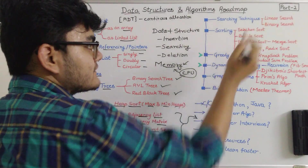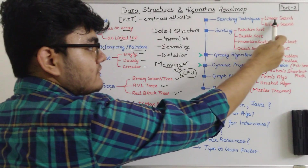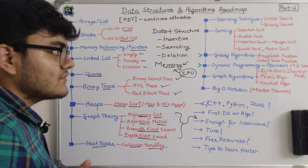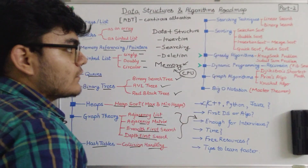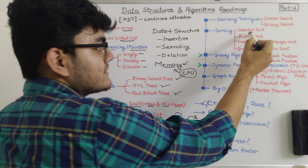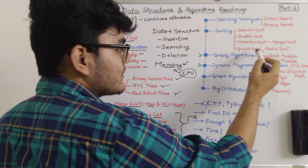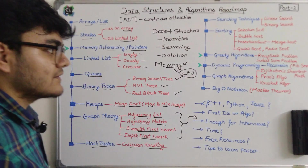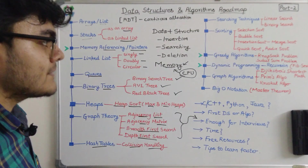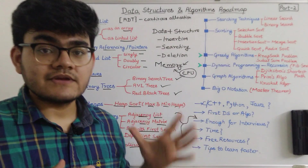In the algorithms part, you will start with searching techniques — you'll cover linear search and binary search. Then you can move to sorting, and there are different sorting mechanisms: selection sort, bubble sort, insertion sort, merge sort, quick sort, and radix sort.